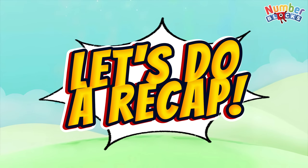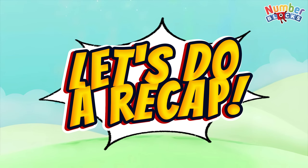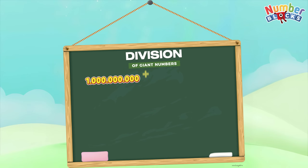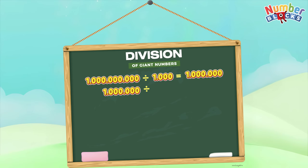Now join me and let's do a recap! Division of giant numbers! One billion divided by one thousand is equals to one million! One million divided by one thousand is equals to one thousand!